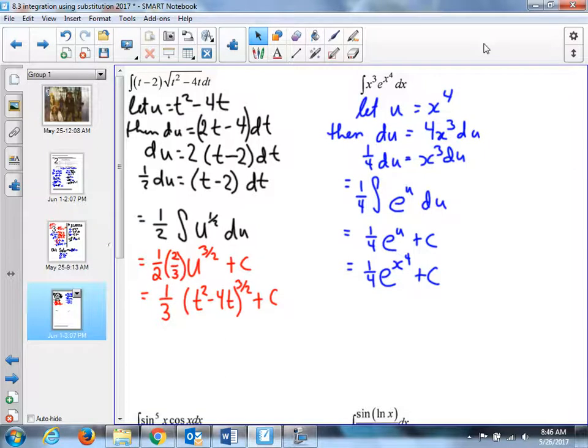Did you guys get that? It's not as complicated as it looks. Because once you've got e to the u, it's sweet. And I double-check. If I do this derivative, the c's gone. e to the x to the four is repeated, but then the derivative of the inside. 4x cubed times 1 quarter. It works.